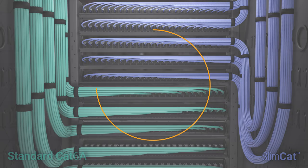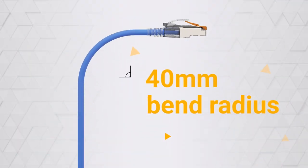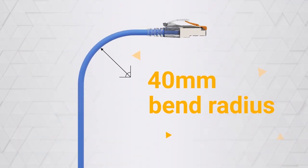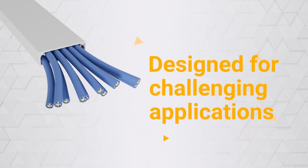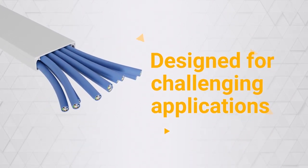With its slim 5mm diameter and 40mm bend radius, the Kord's PRS SlimCat network cable enables Category 6A connectivity in challenging applications, such as tight wall spaces and low-capacity cable pathways.